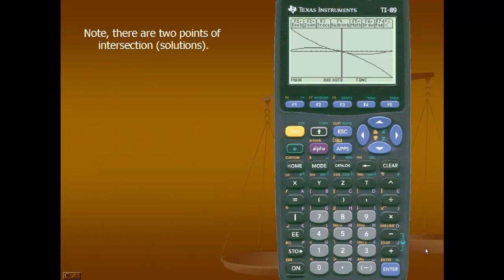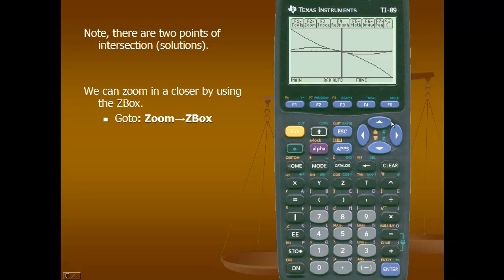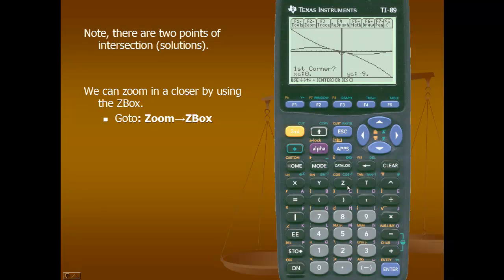Note that there are two points of intersection. We can zoom in closer by using the zoom box. I'll press F2, which is zoom, and my first option is zoom box. This is what I want, so I'll press enter.